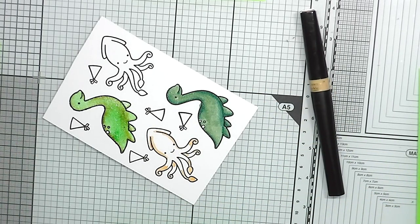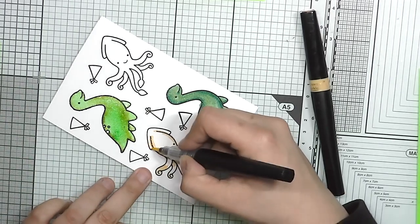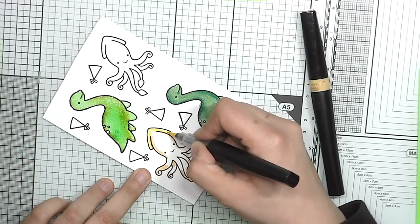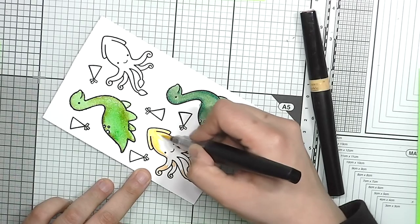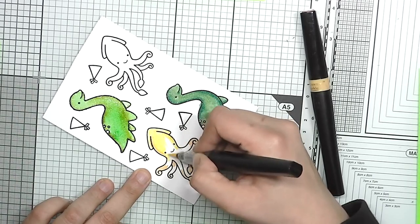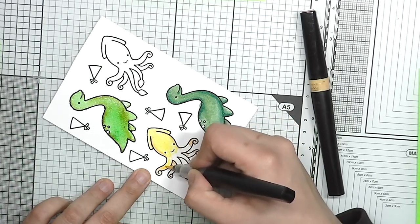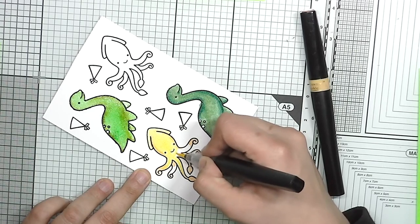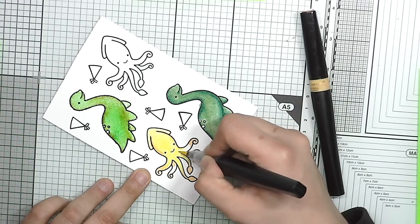And if I didn't say it before, the stamps are from Lånfån and they are called Lovable Legends I think, and they are super cute, they love monsters. And you can color them up any way you want, that's the fun of them.